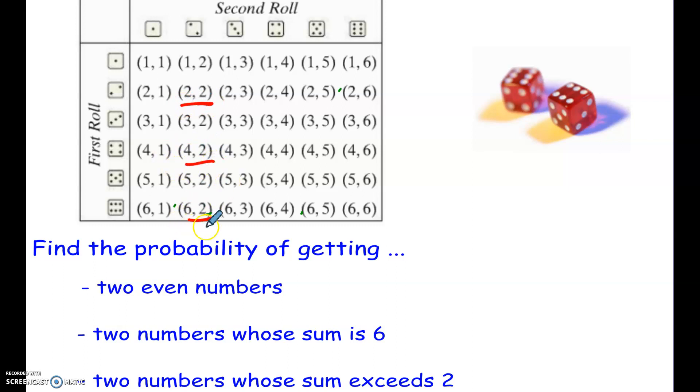So it would be 2, 2, 4, 2, 6, 2. Go to the next even column, the 2, 4, the 4, 4, the 6, 4. And then in my sixth column, 2, 6, 4, 6, and 6, 6.